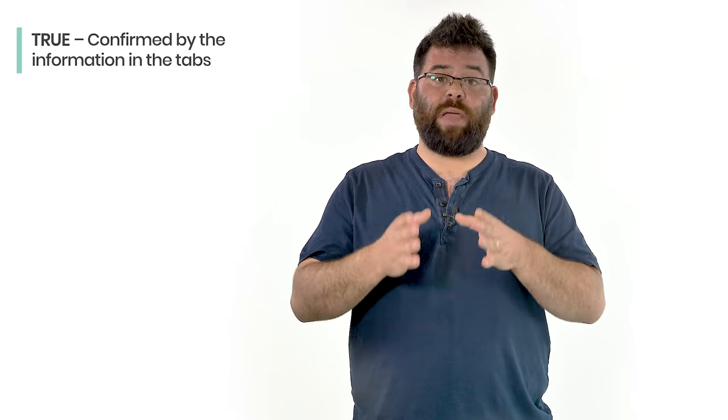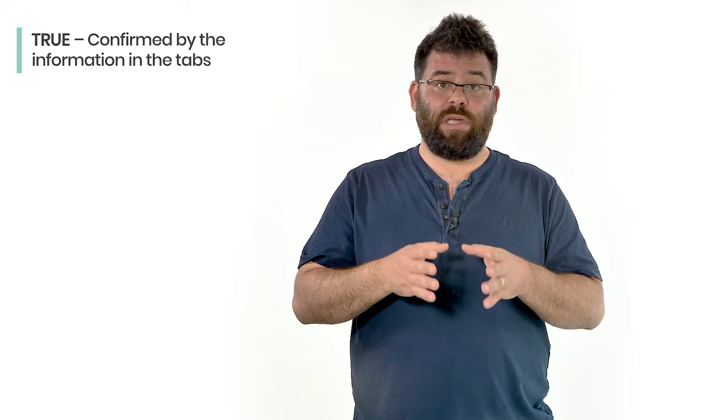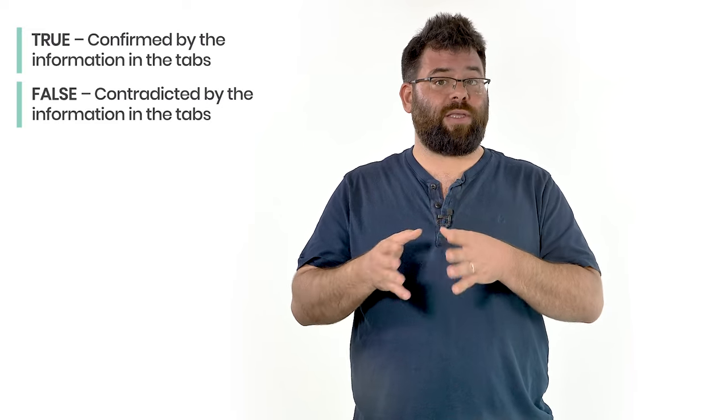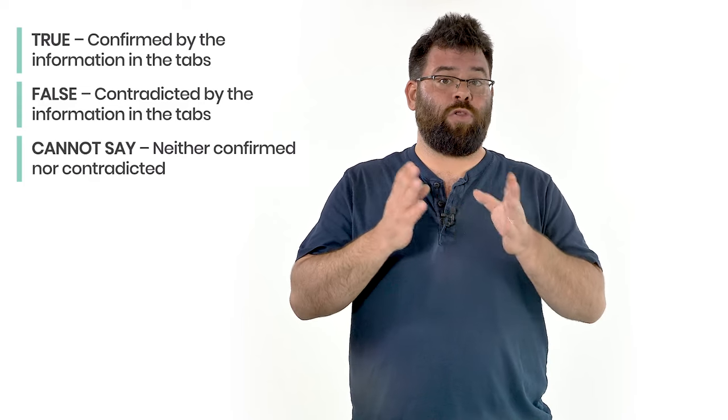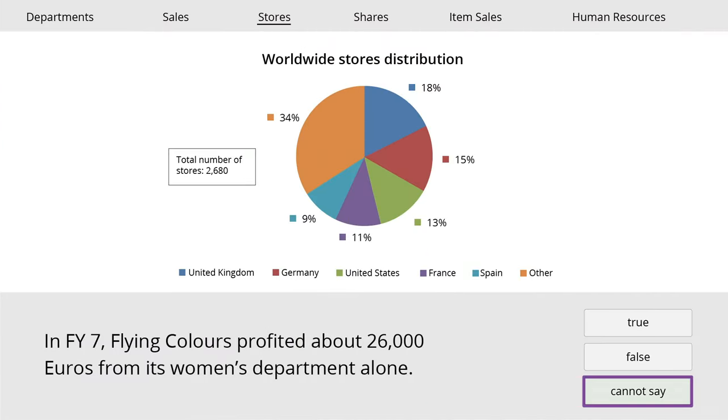A true answer is confirmed by the information in the tabs, a false answer is contradicted by it, and cannot say, neither confirmed nor contradicted. Note that whenever answering a question, the tab which contains the correct answer should be open. If a different tab is open, you will lose points even when your answer is correct.